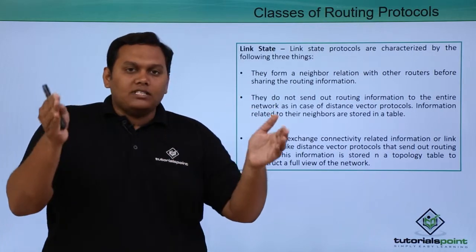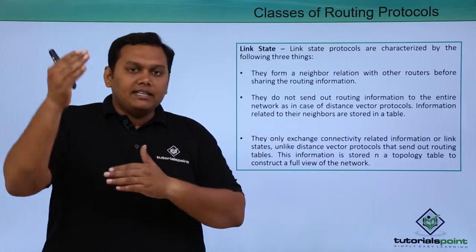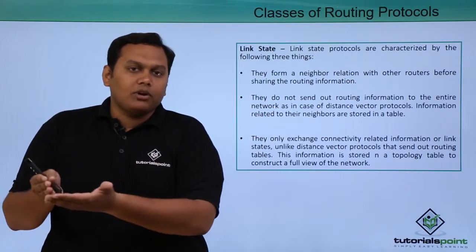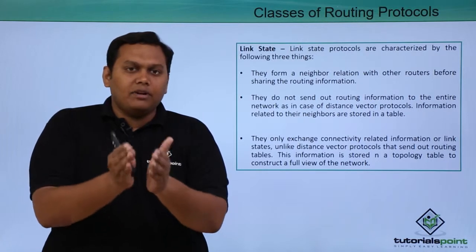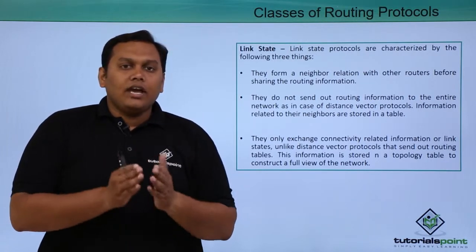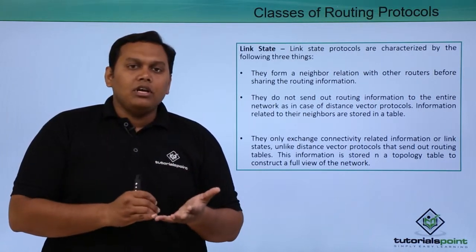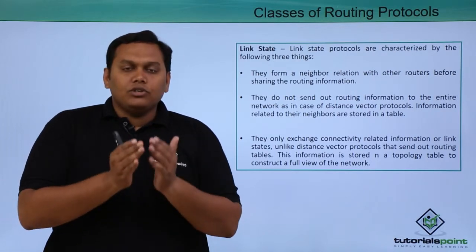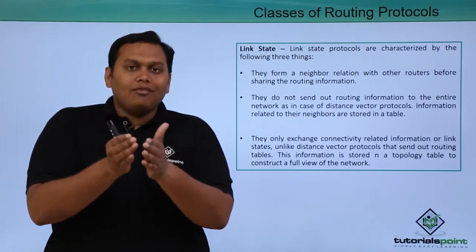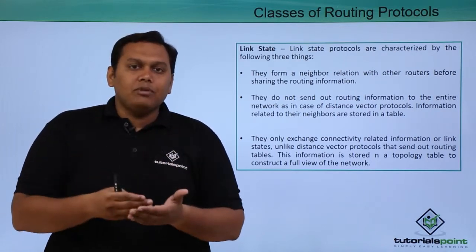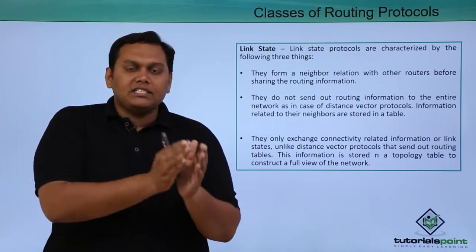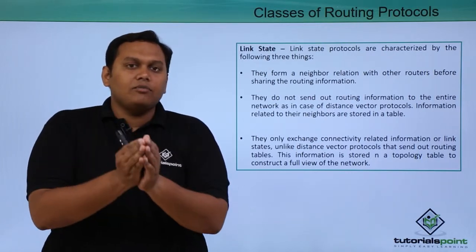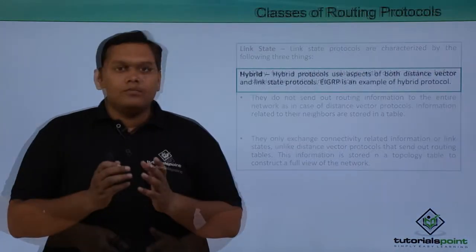The network topology is built in the topology table, so all information related to the network topology is available there. Link state protocols maintain three tables: a routing table, a topology table, and a neighbor table. Information about link states, neighbors, and routing is available across these tables.